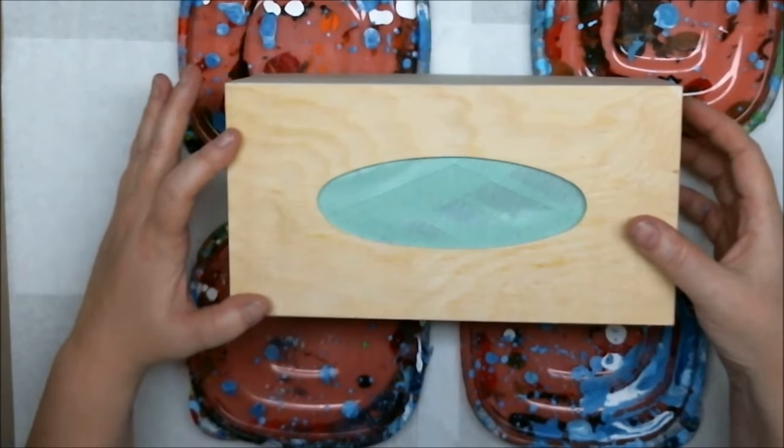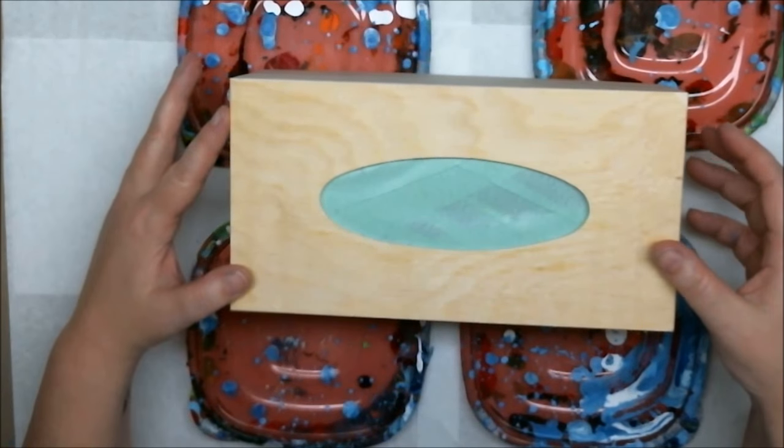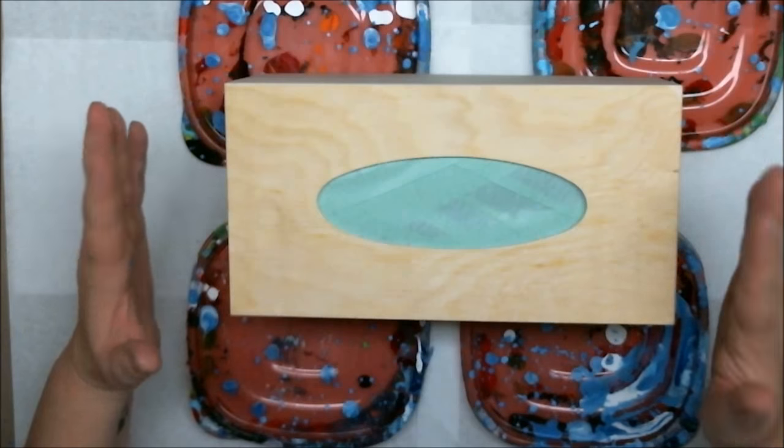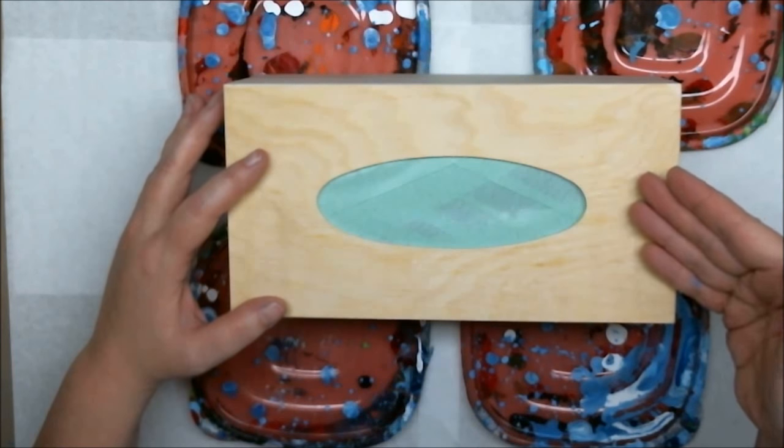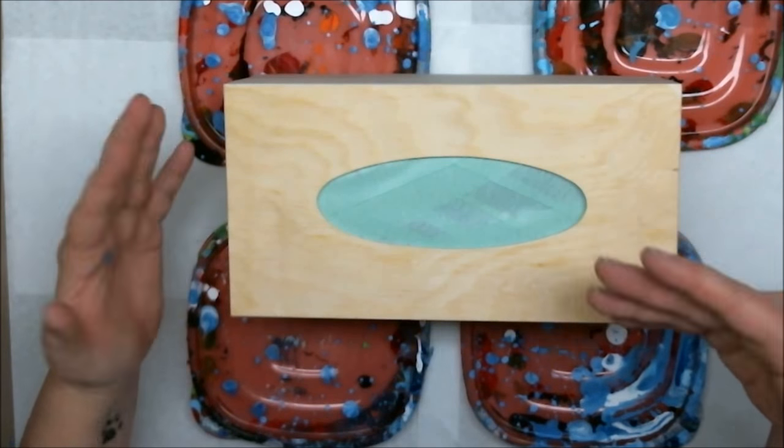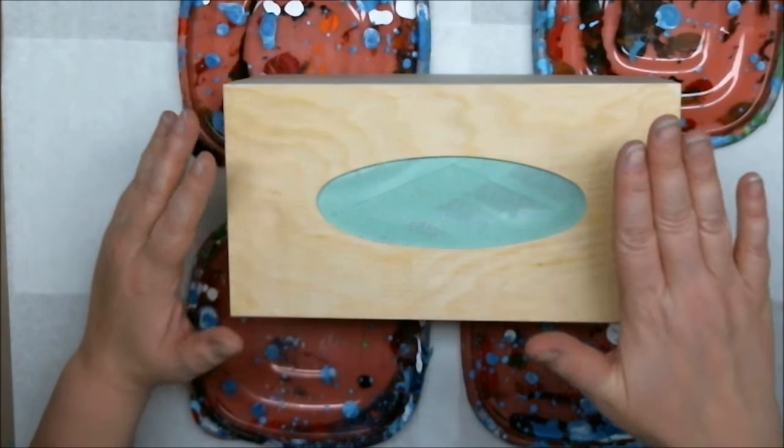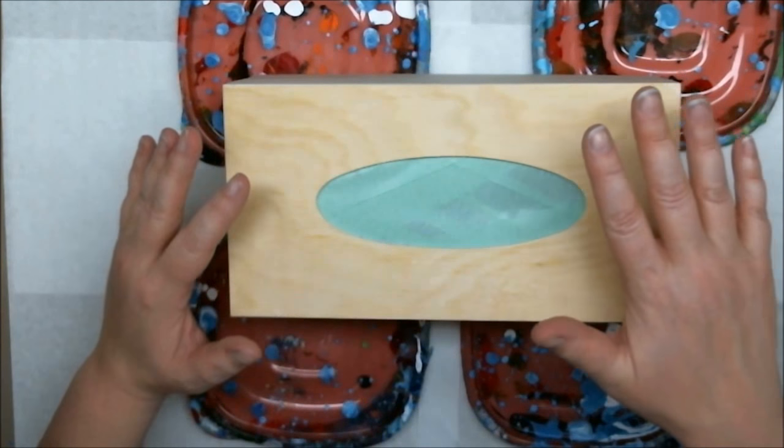I'm going to seal the hole in the bottom because I don't want it to drip on the inside. Okay so there we are. This is protected. We're going to do a pour. Now I recommend that you either seal or gesso and sand this first.